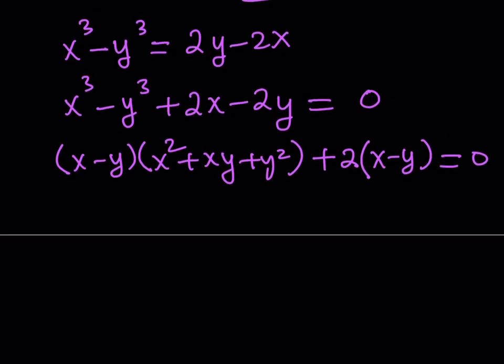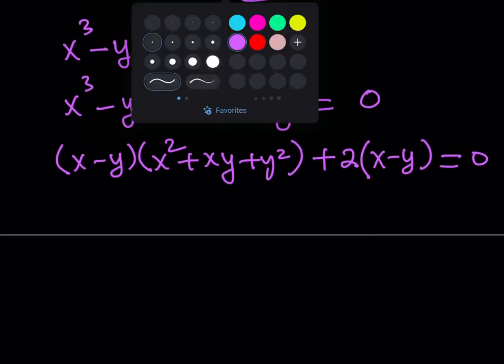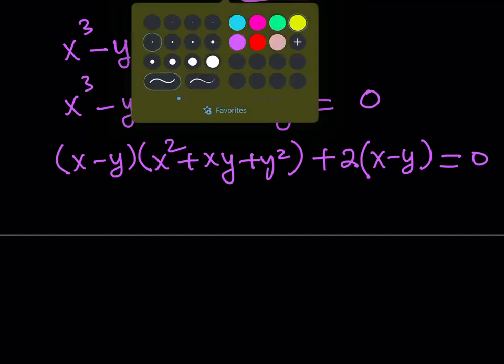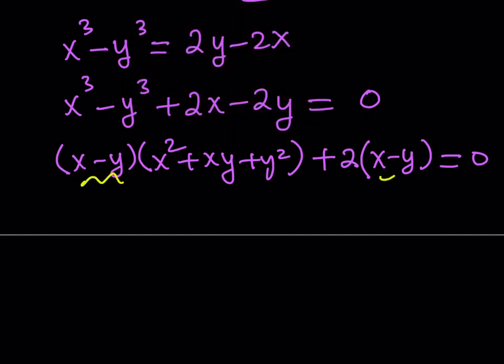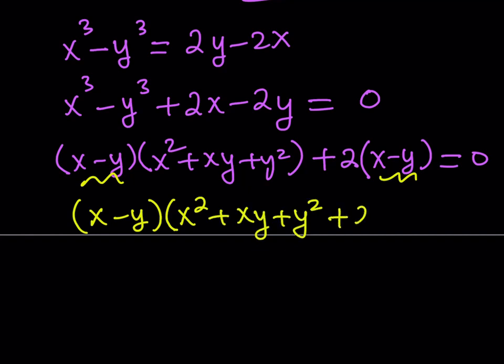What am I going to do next? Well, notice that x minus y here is a common factor. So x minus y, x minus y, which means I can pull it out. In other words, I can factor. Let's take out x minus y. And what do we have inside? x squared plus xy plus y squared, the first factor, and then plus 2 equals 0.